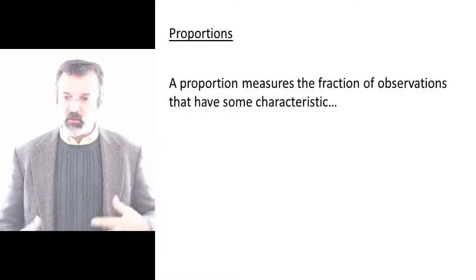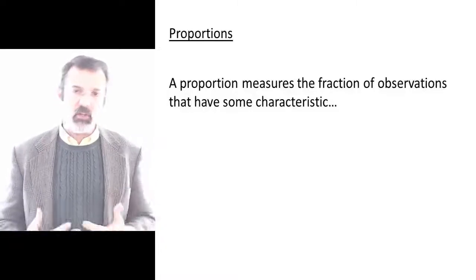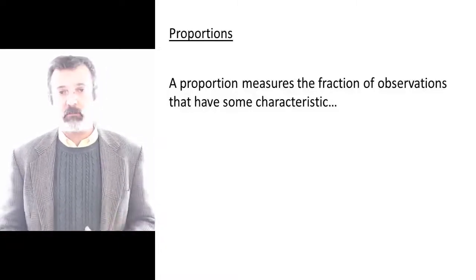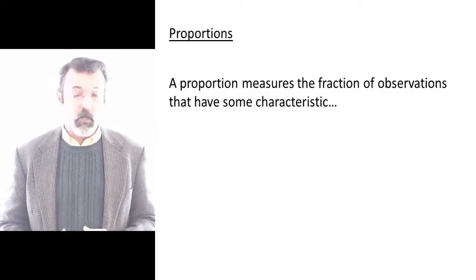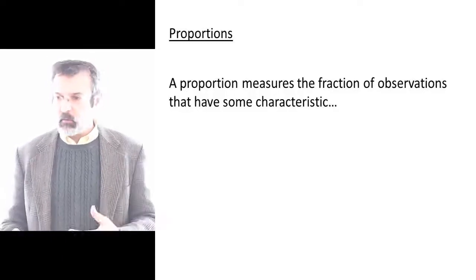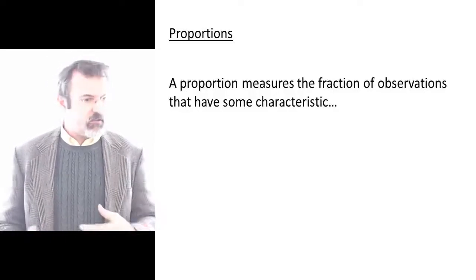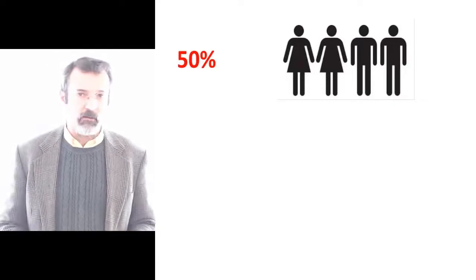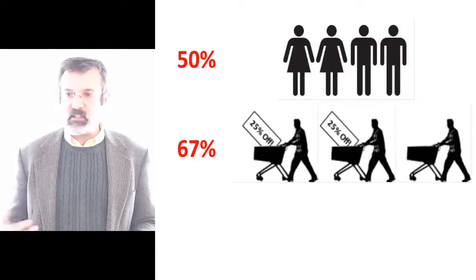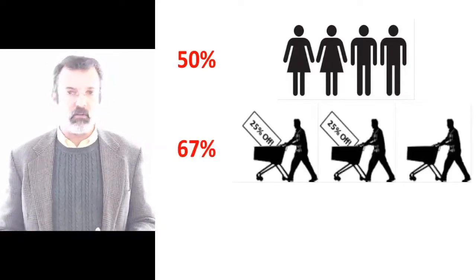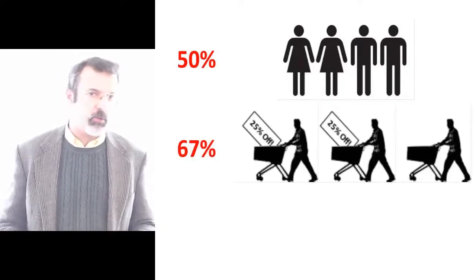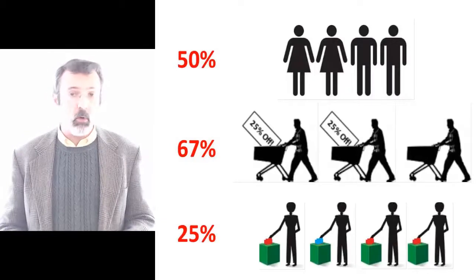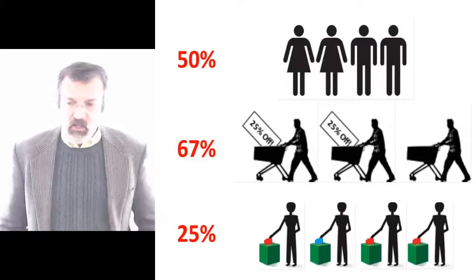A proportion measures the fraction of observations that have some characteristic. For example, we might say that 50% of college students are females, or 67% of shoppers use coupons, or 25% of voters vote for a particular candidate.